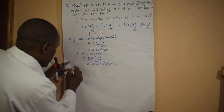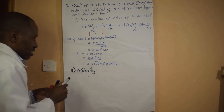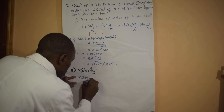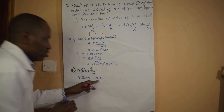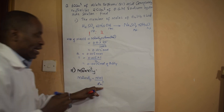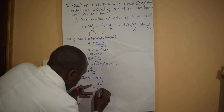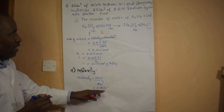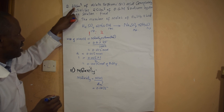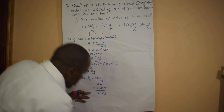Let's calculate the molarity. Molarity equals moles divided by volume in liters. The moles of sulfuric acid are 0.0075, and I divide by the volume of sulfuric acid which was 30 cm³, so 30 divided by 1000 equals 0.03 liters.